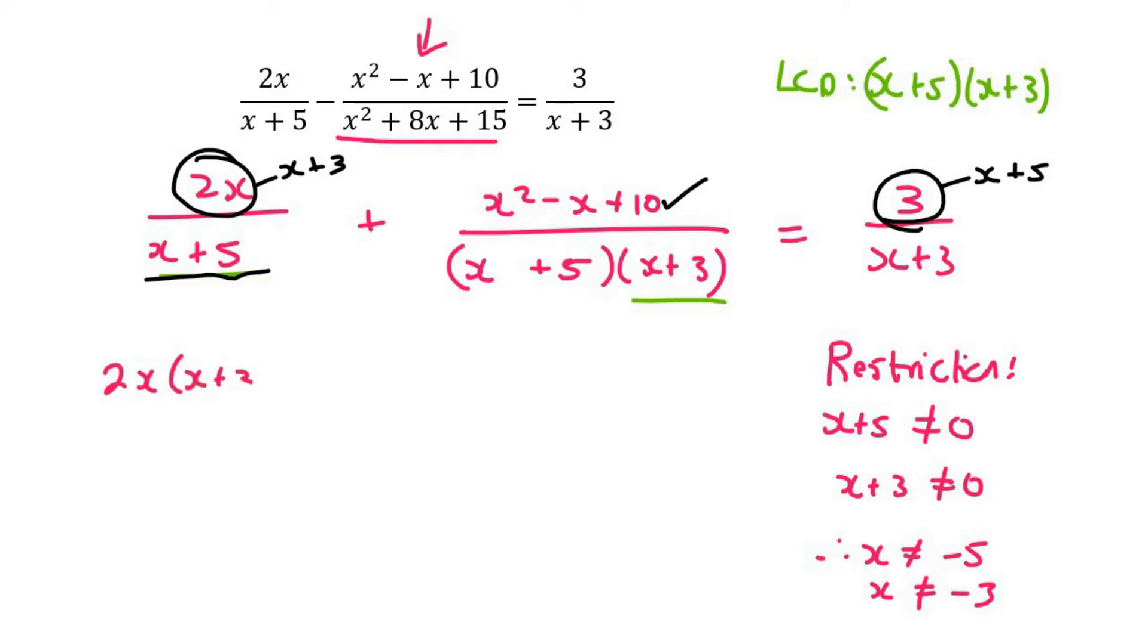So it's going to say 2x in brackets, x plus 3 over x plus 5, x plus 3 plus x squared minus x plus 10 over x plus 5. This one doesn't need anything.